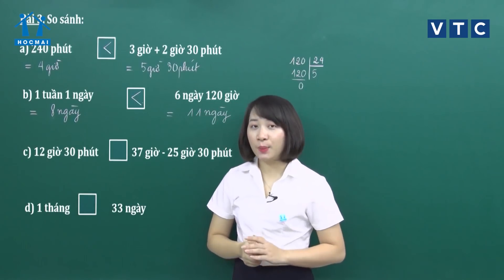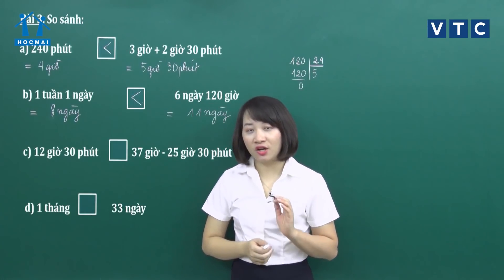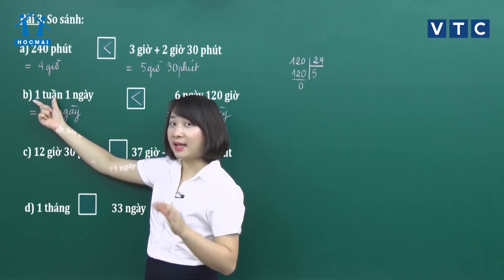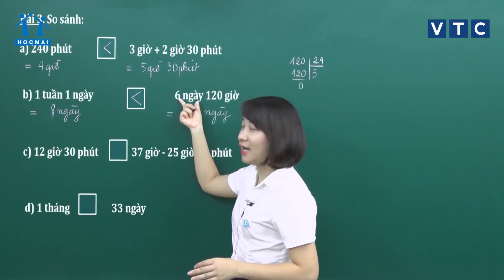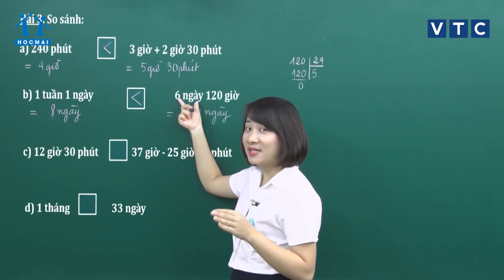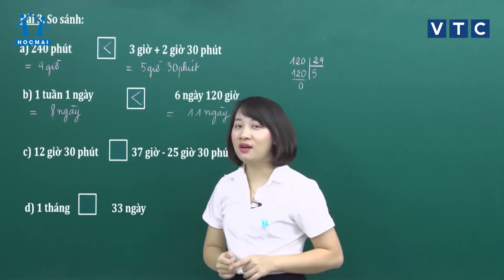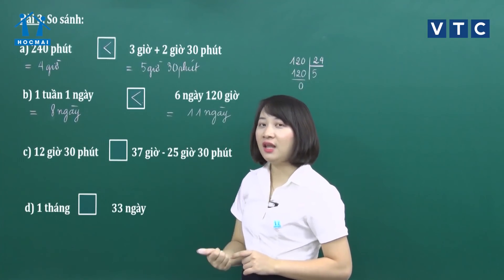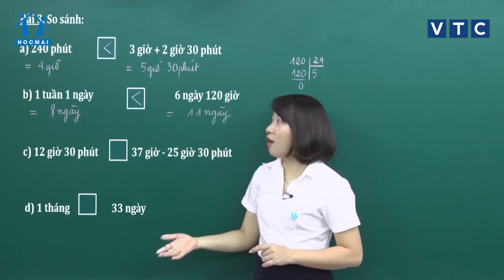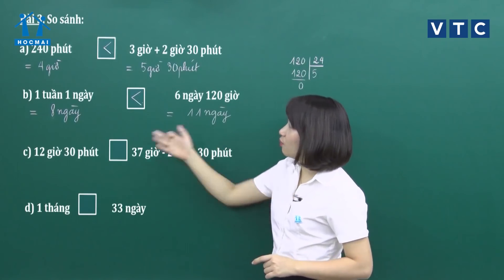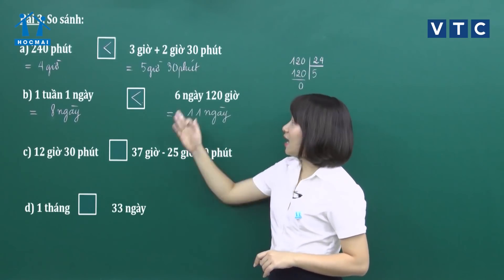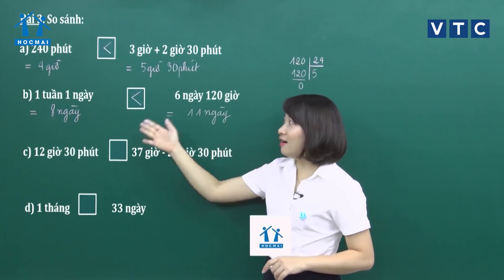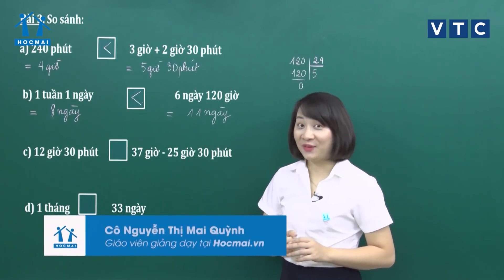Bài toán này dễ gây nhầm lẫn: các bạn thấy 1 tuần có 7 ngày và bên này có 6 ngày, dễ hiểu nhầm mà điền dấu lớn hơn. Nhưng sau khi phân tích và đổi đơn vị về cùng loại, 6 ngày 120 giờ đã trở thành 11 ngày — lớn hơn 1 tuần và 1 ngày.